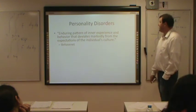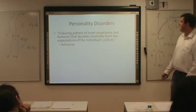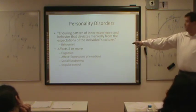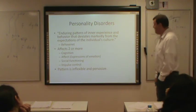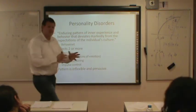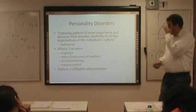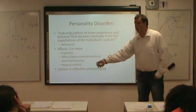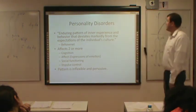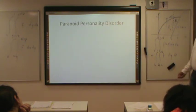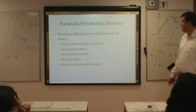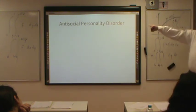Personality disorders are enduring patterns of inner experience and behavior that deviate markedly from the expectations of the individual's culture. They affect cognition, affect, social functioning, or impulse control, and the pattern is inflexible and pervasive. Personality is considered fairly stable throughout someone's life, so personality disorders are long-lasting — potentially years and years. Paranoid personality disorder — people are paranoid, don't trust others, think others will deceive them, and question their friends' loyalties. Anti-social personality disorder — these individuals show disregard for others, lie, steal, are irresponsible, and show no remorse for bad things they do.